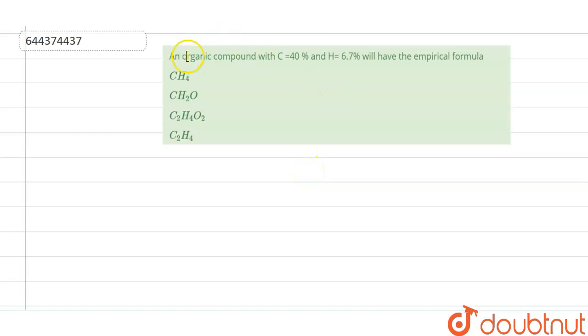Hello everyone. The question is an organic compound with carbon 40% and hydrogen 6.7%. We have to find out the empirical formula. Four options have been given. Let us find out which is the correct answer.